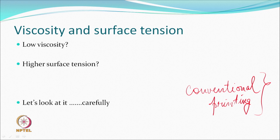What do we mean by higher surface tension? If the surface tension is higher, the drop as it comes out becomes spherical, and the dot created will be more circular. If surface tension is very low, the drop may spread. So we generally prefer low viscosity and high surface tension.